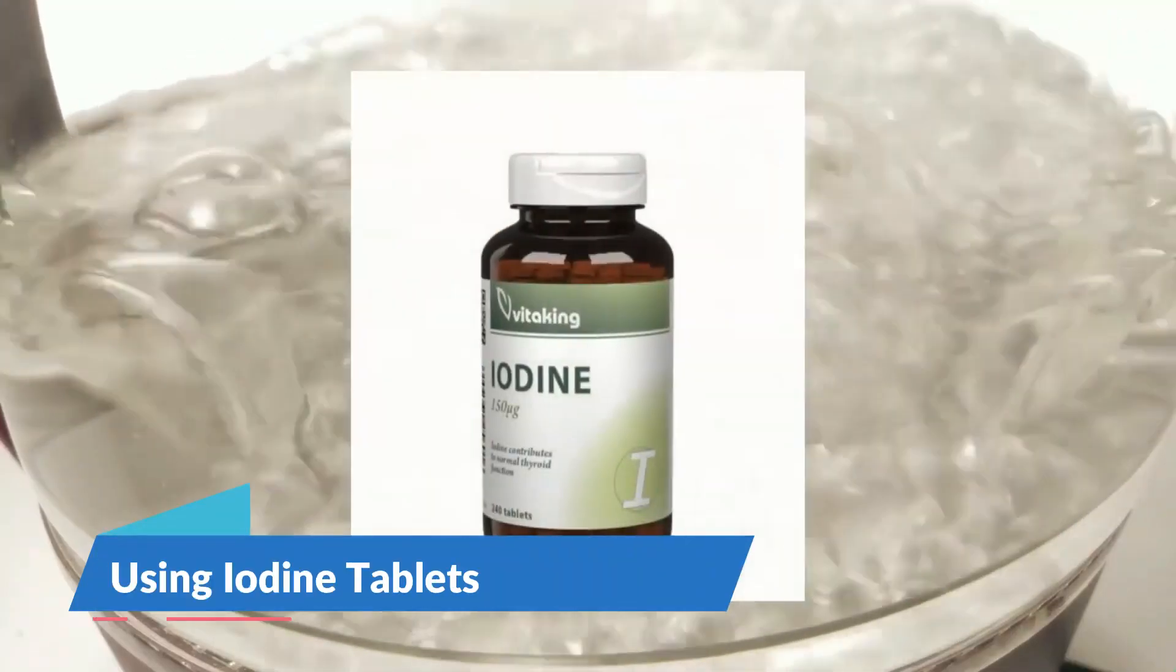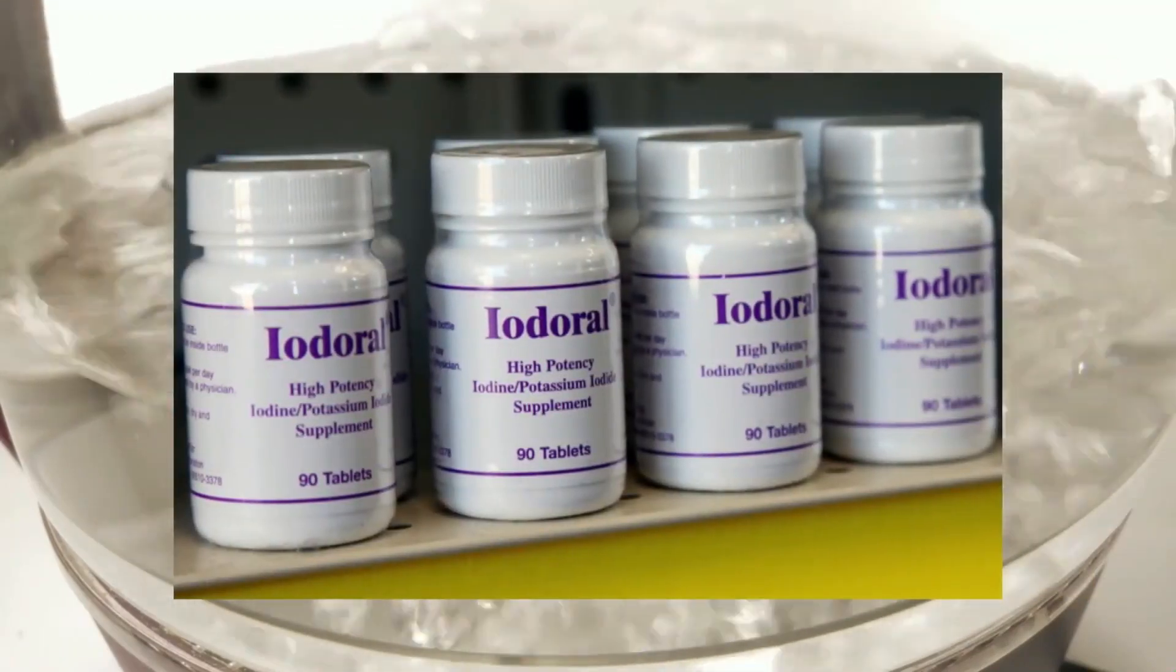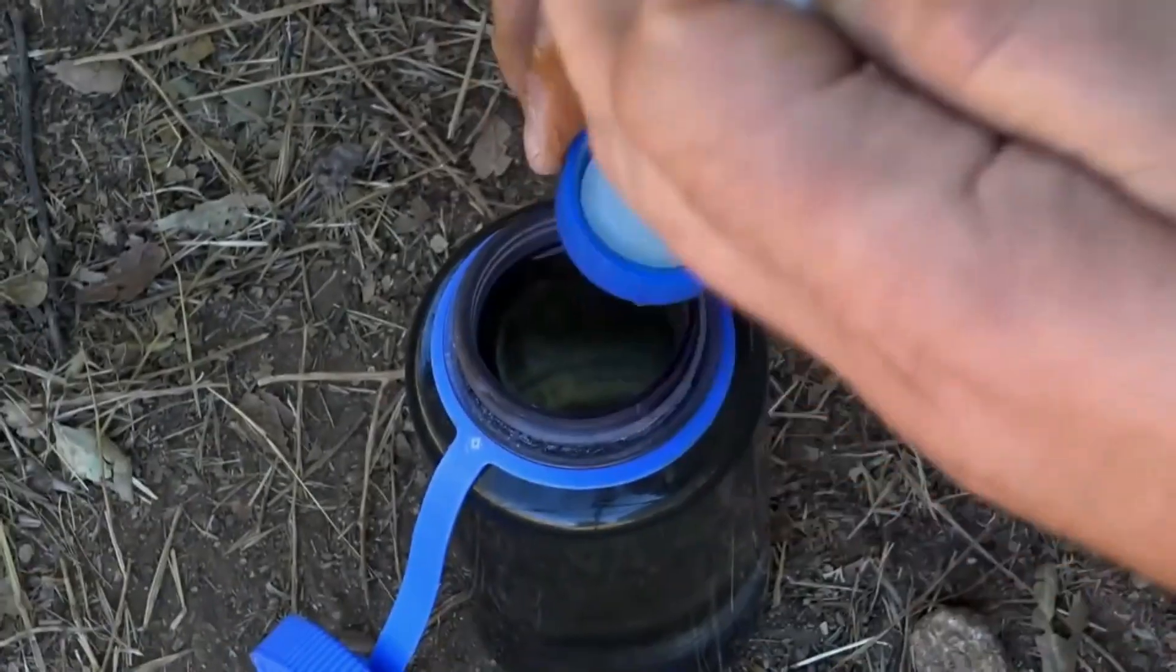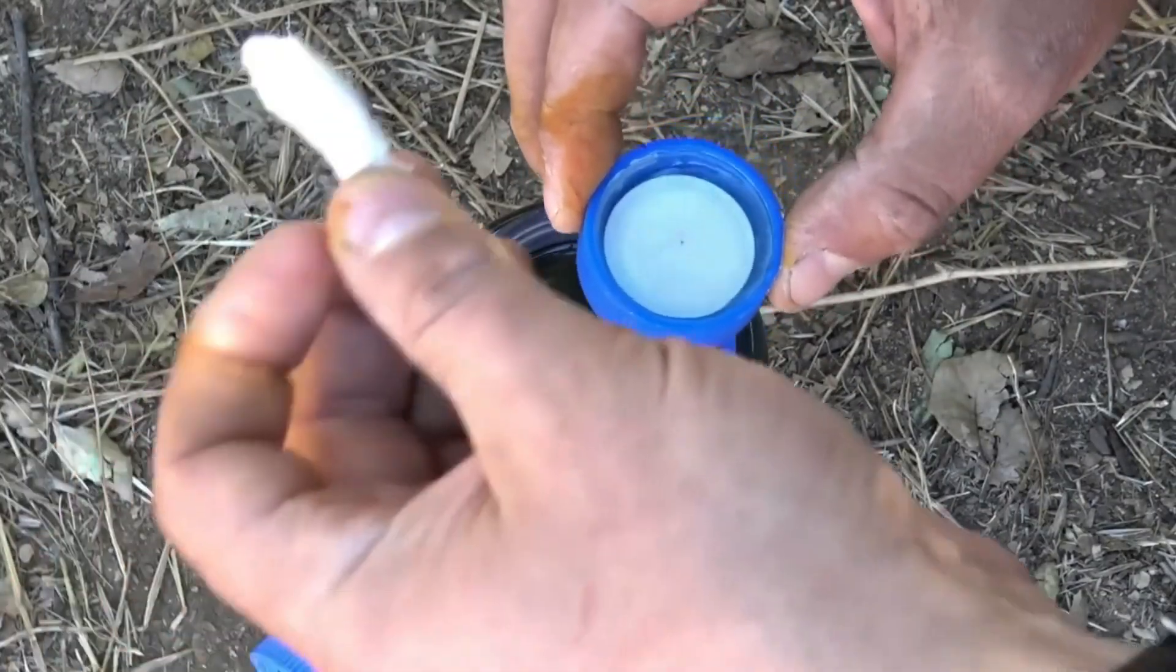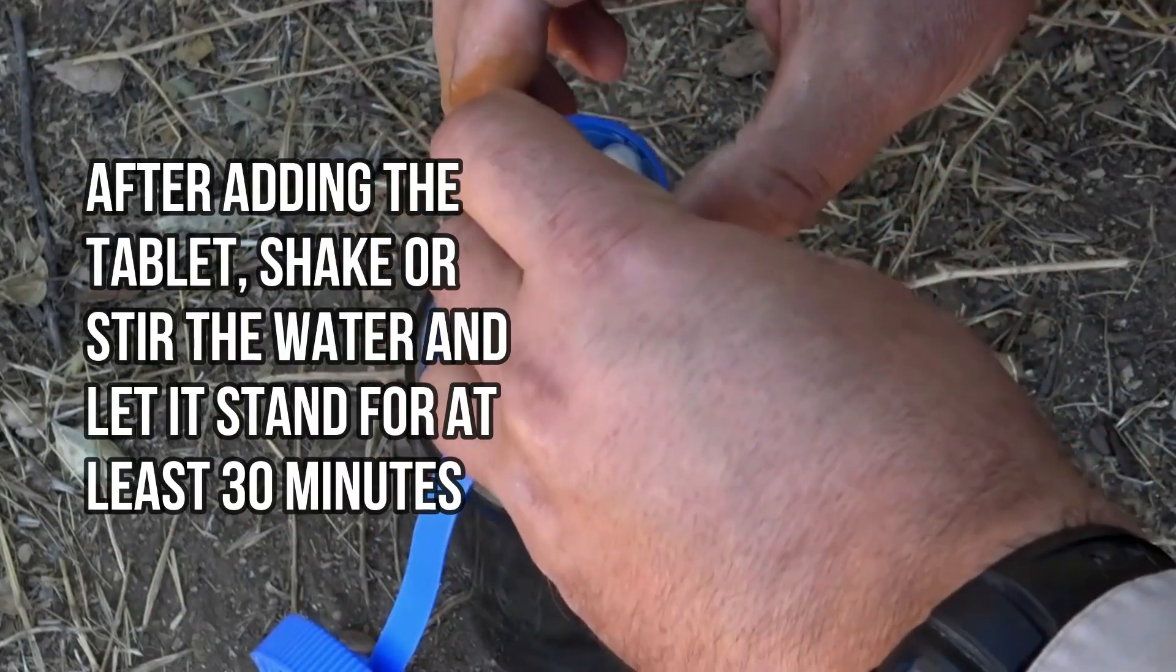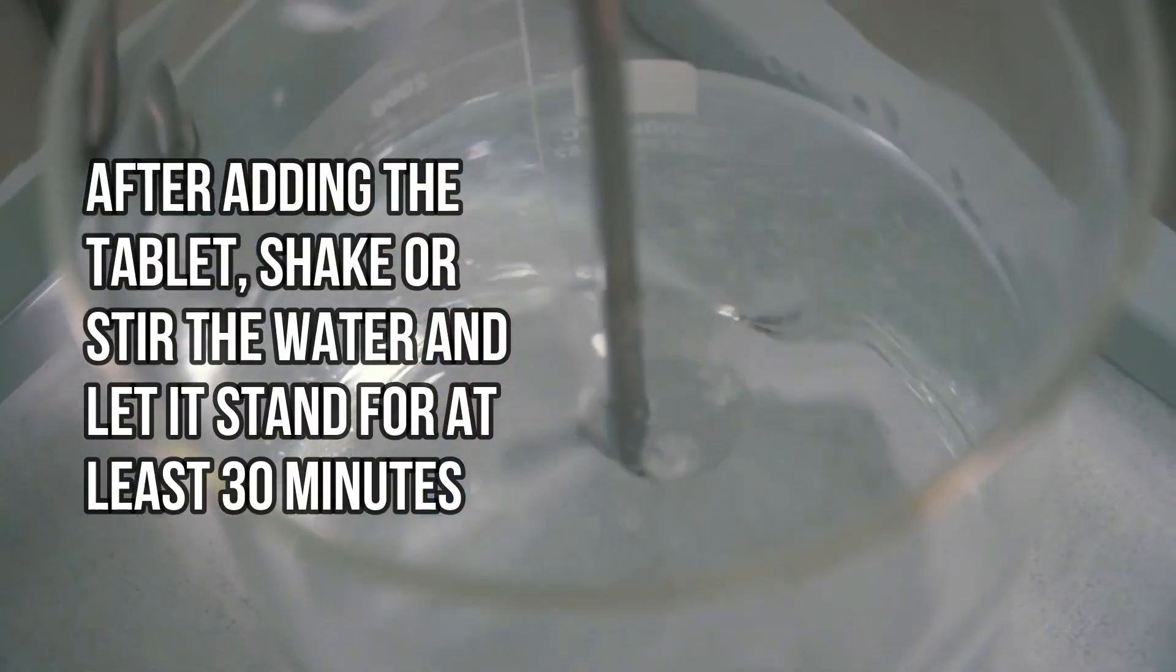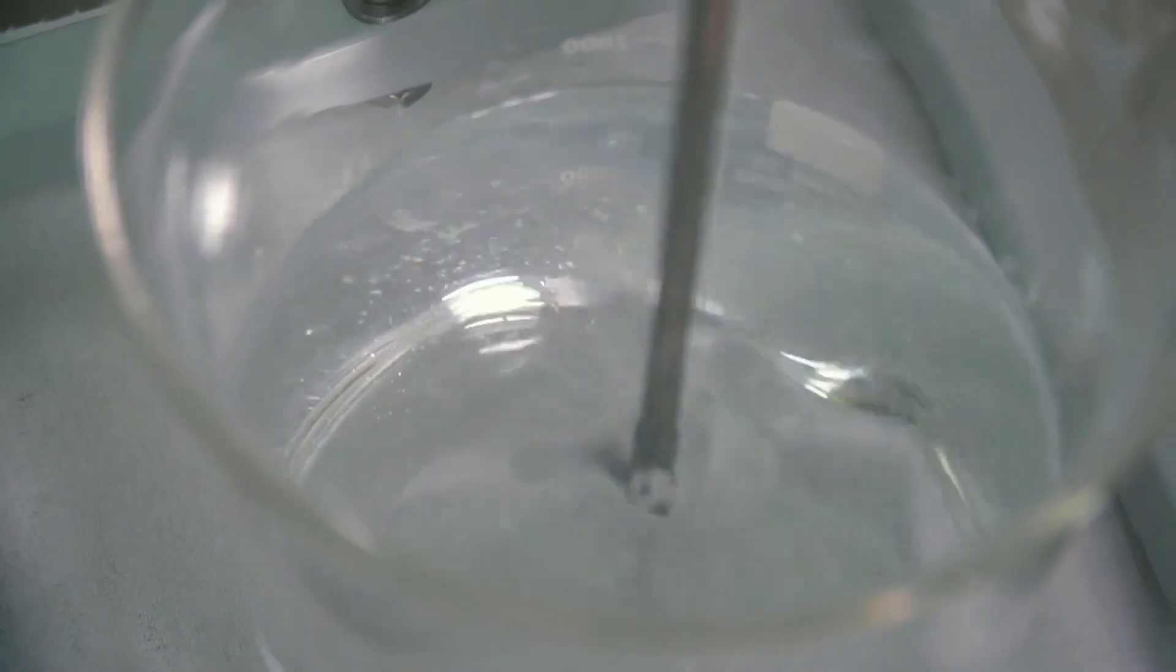Iodine disinfection using iodine tablets. Preparation: Iodine tablets are available at most camping or outdoor supply stores. Follow the manufacturer's instructions for the correct dosage as it can vary. Dosage: Typically it's one tablet per quart liter of water. Procedure: After adding the tablet, shake or stir the water and let it stand for at least 30 minutes. Iodine works best in warm water, so if the water is cold or very cold, allow for a longer contact time.